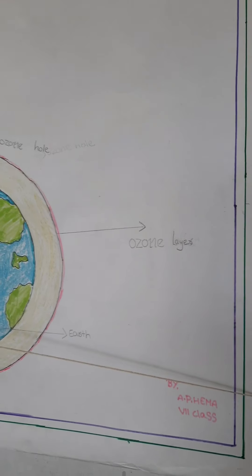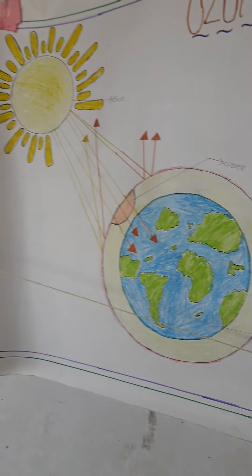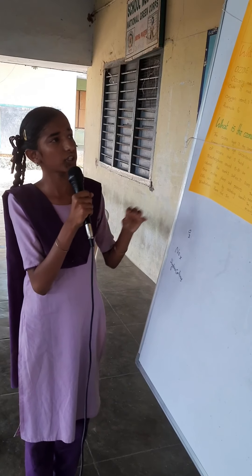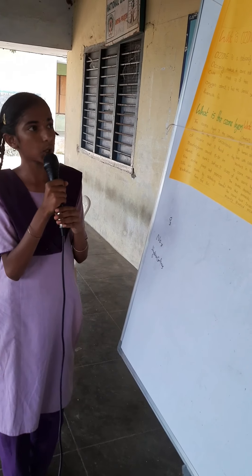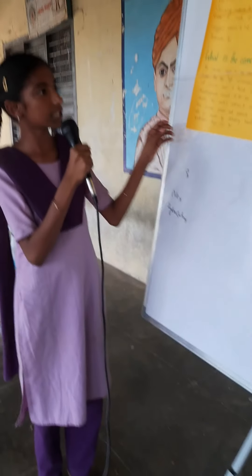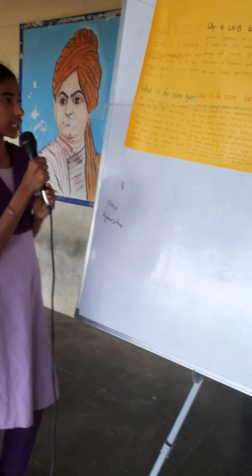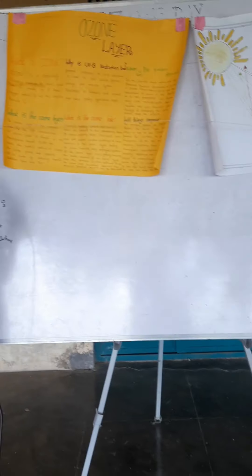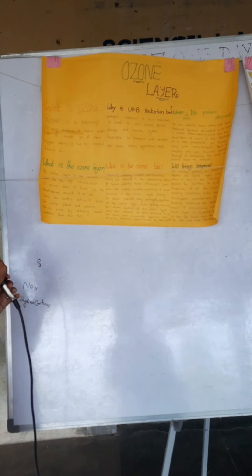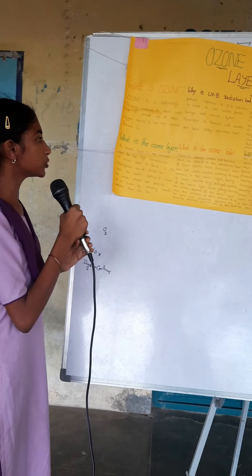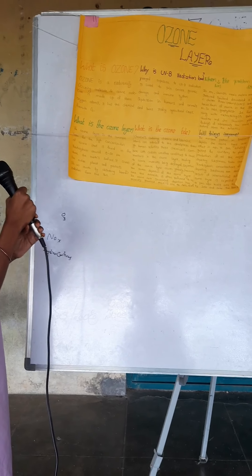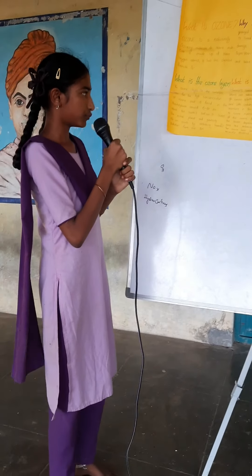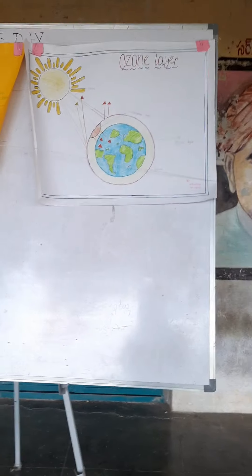Why is UVB radiation bad? Prolonged exposure to UVB radiation is linked to skin cancer, genetic damage, immune system suppression in humans and animals, and lower-yielding agricultural crops. What is the ozone hole? Chemicals containing chlorine and bromine atoms are released into the atmosphere through human activities. These chemicals combine with certain weather conditions to cause reactions in the ozone layer, leading to ozone molecules being destroyed. Depletion of the ozone layer occurs globally; however, the most severe depletion is often referred to as the ozone hole.